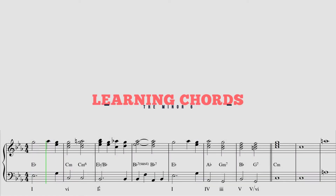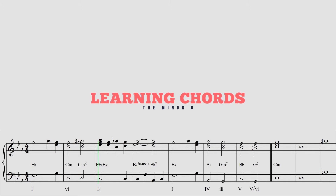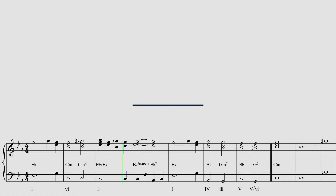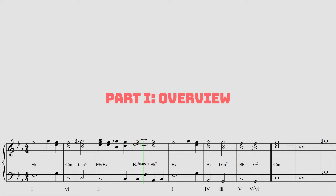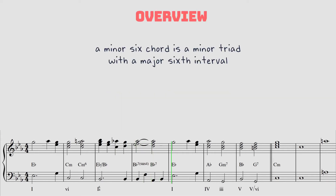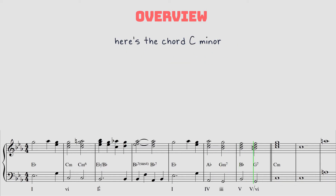Today we're going to look at the minor 6 chord — what it is and how you can use it. A minor 6 chord is a minor triad with a major 6th interval. Here's the chord: C minor.